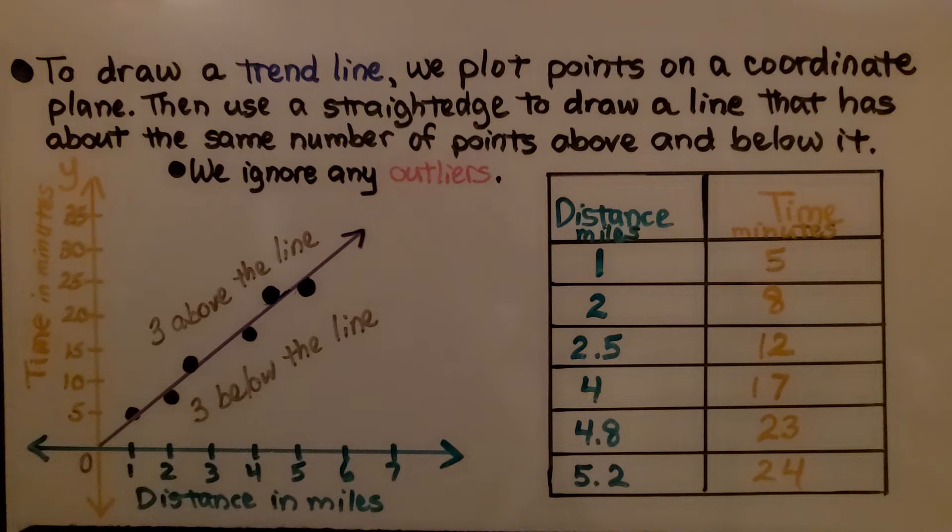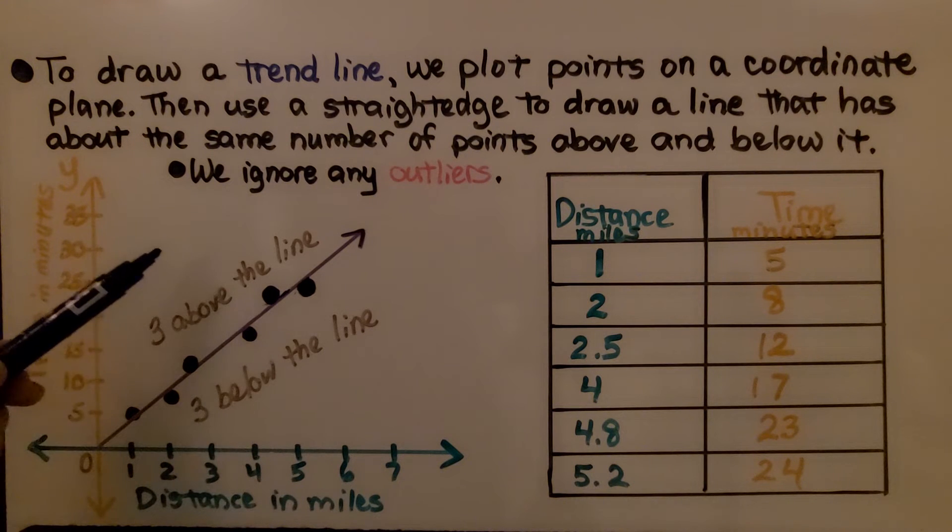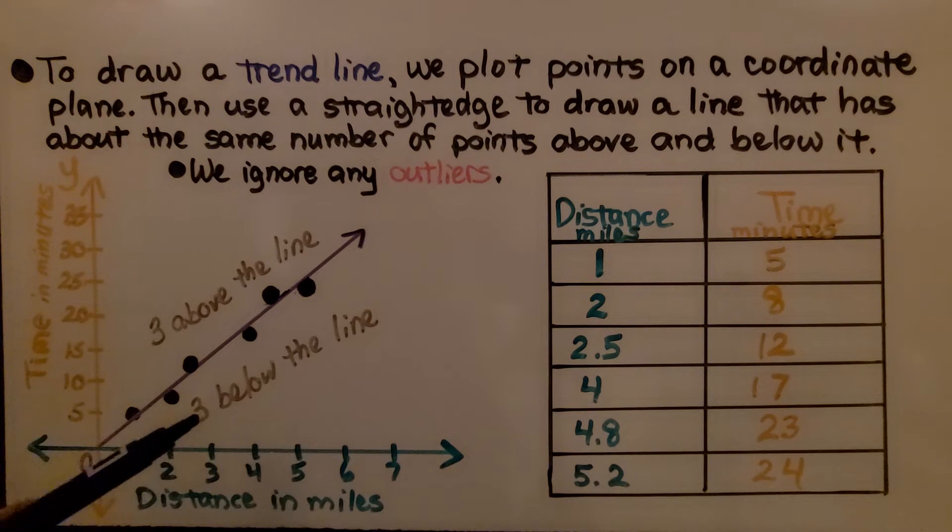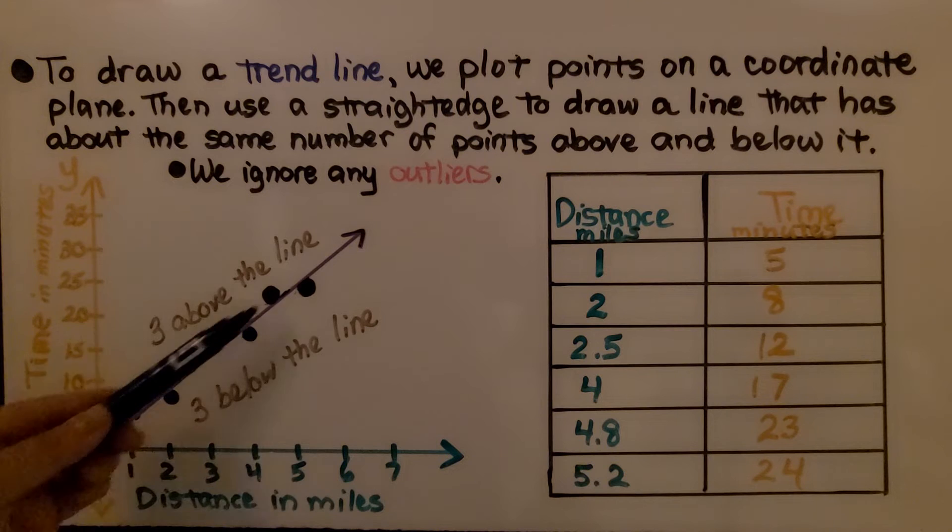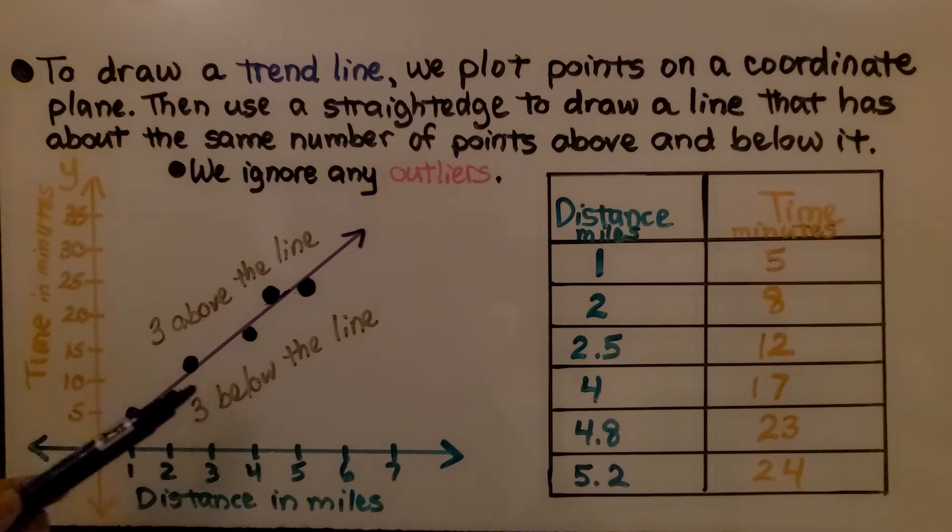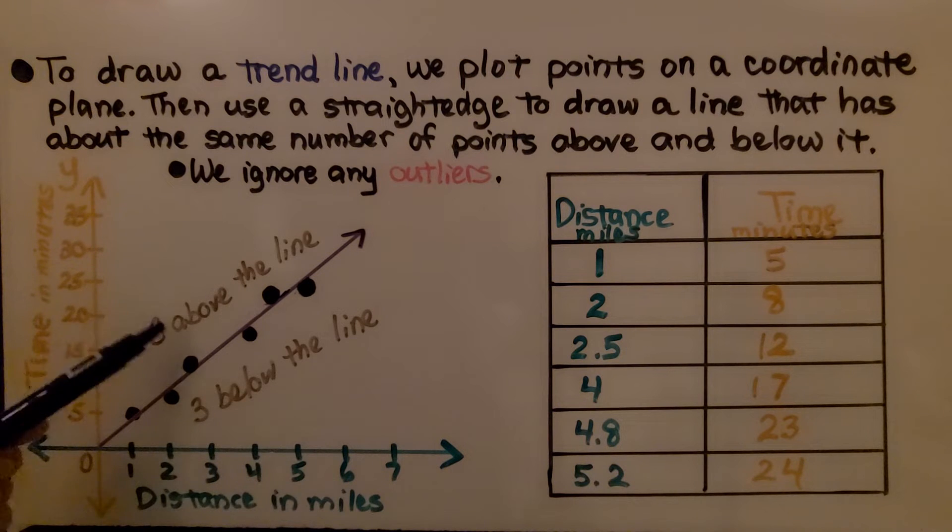To draw a trendline, we plot points on a coordinate plane. Then we use a straight edge to draw a line that has about the same number of points above and below it. If you have an odd number of points, just try to make it go through the center of those points, so you might have four below the line and three above, or vice versa.